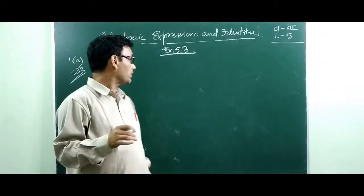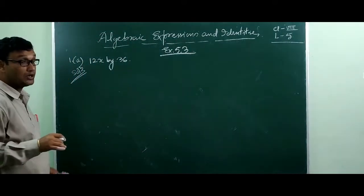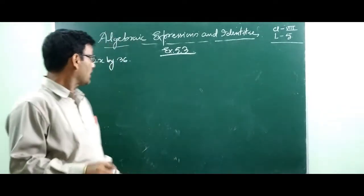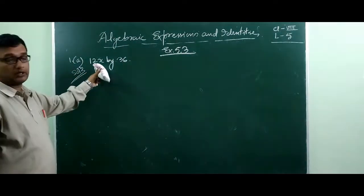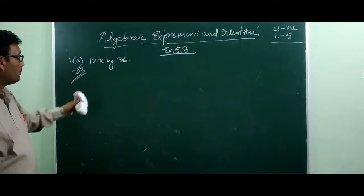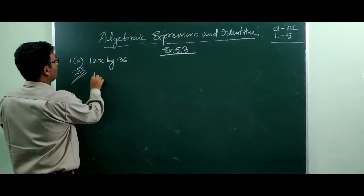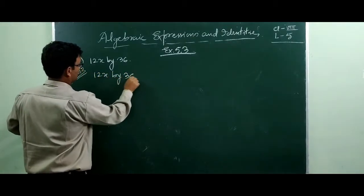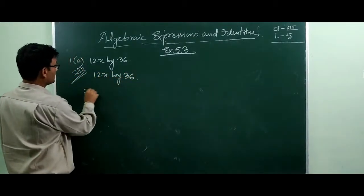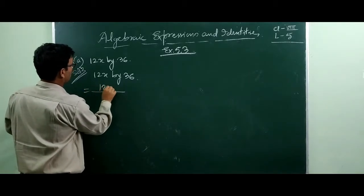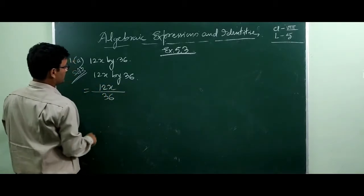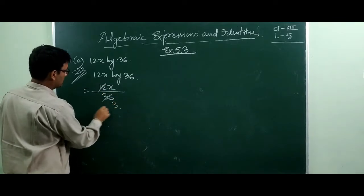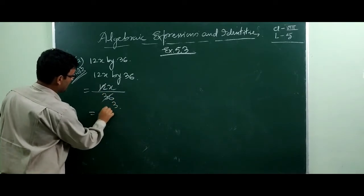The first question in exercise 5.3 involves monomial terms. How to divide monomial terms — here 12x divided by 36. We can write 12x by 36, cancel by 12, and that gives us x by 3.